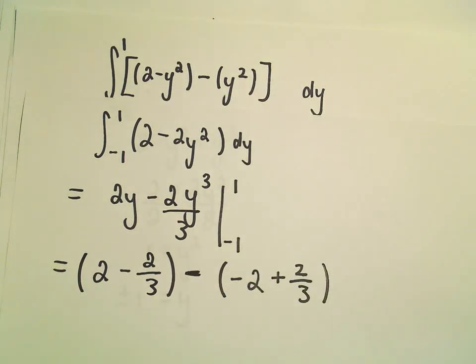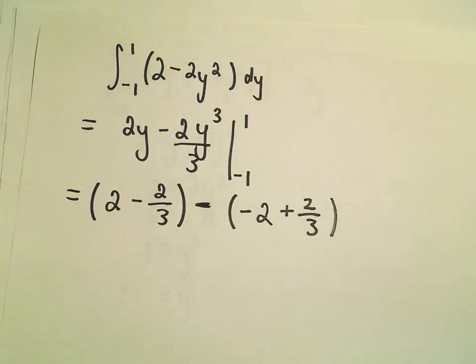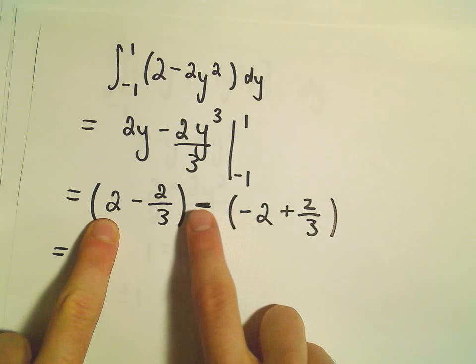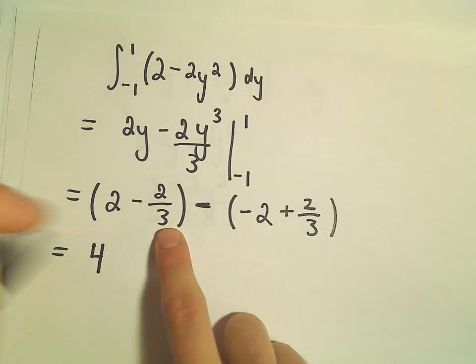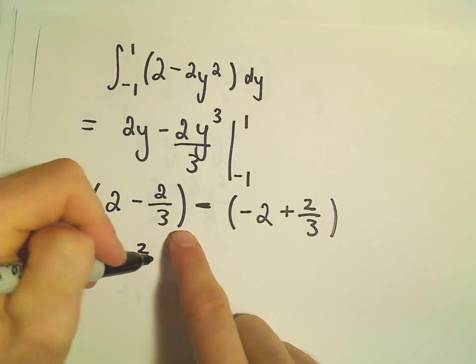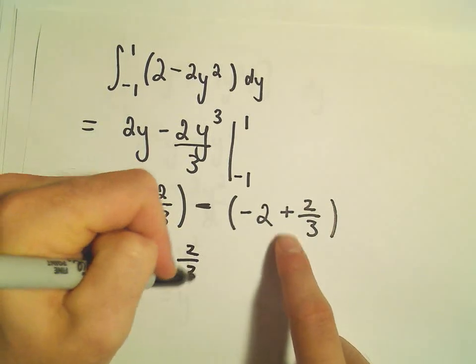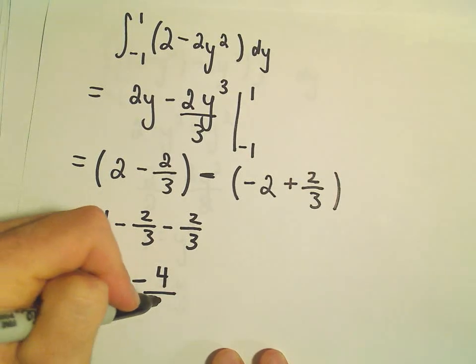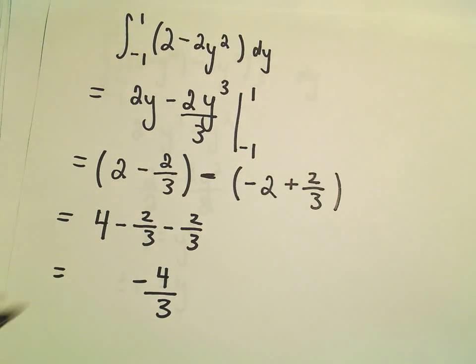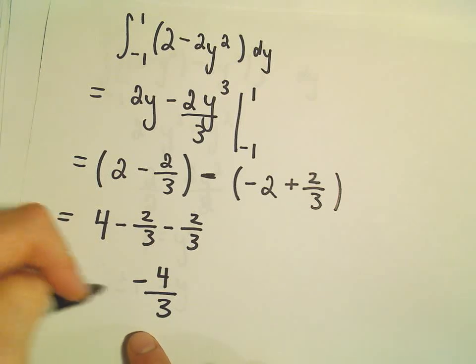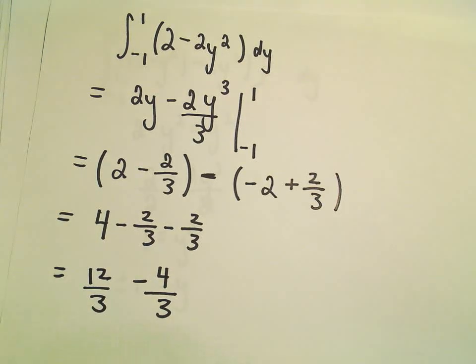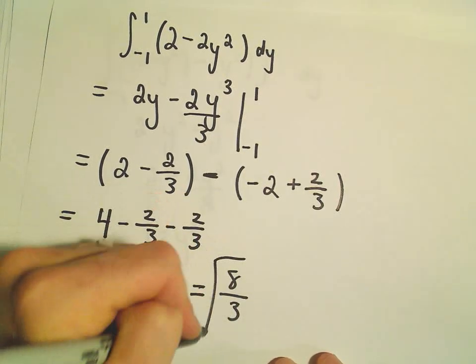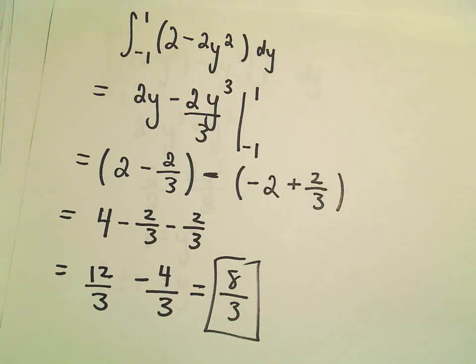Let's see. Does anything cancel here? It doesn't look like it. It looks like we would have 2, and then if we distribute the negative, a 2 plus a 2. So, that'll give us 4. And then, we would have a negative 2 thirds still, and I guess another minus 2 thirds. So, negative 2 thirds and negative 2 thirds is negative 4 thirds. And, we can write 4 over 1 as 12 over 3. So, really, we have 12 over 3 minus 4 over 3. So, I'm getting the value 8 over 3 as the value of the area.